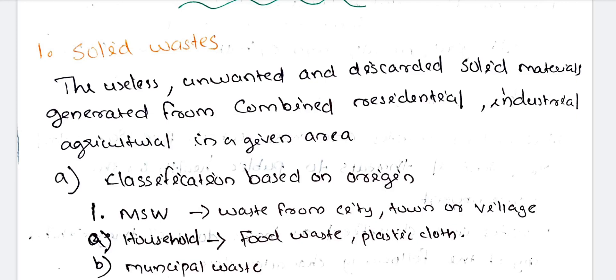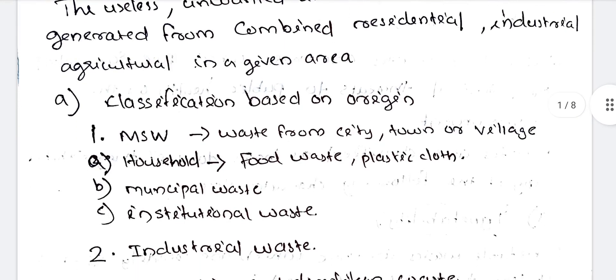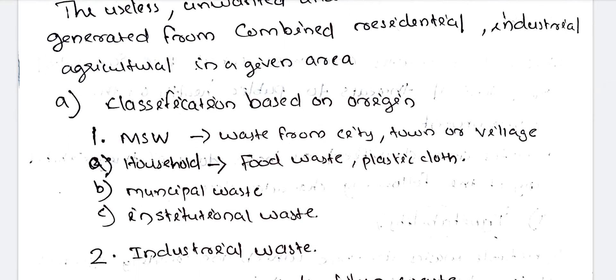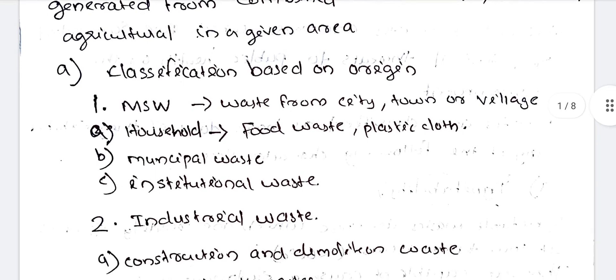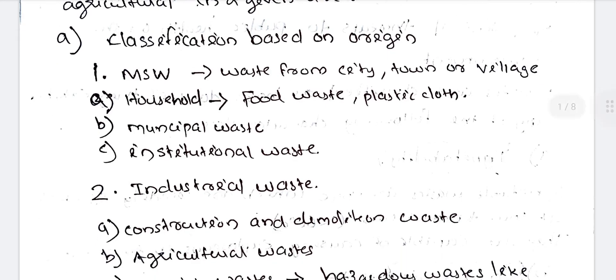Solid wastes are classified based on origin. What is MSW? Municipal Solid Wastes — waste from city, town or village. MSW includes household wastes, municipal wastes, and institutional wastes such as food wastes, plastic cloths, paper wastes.